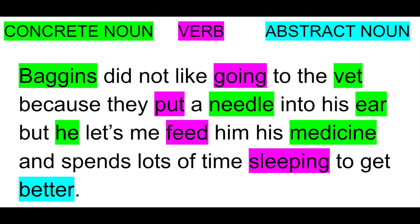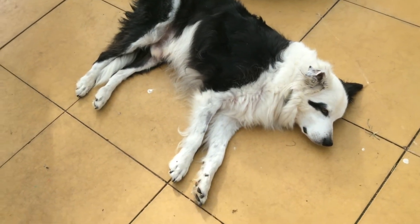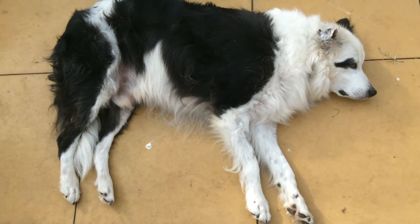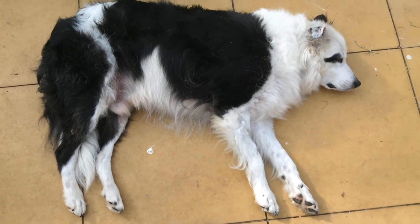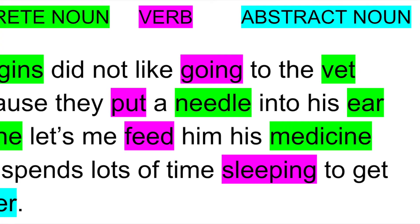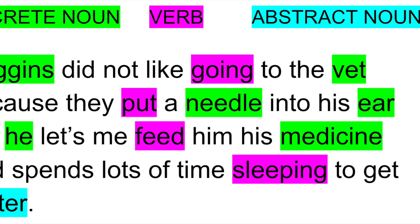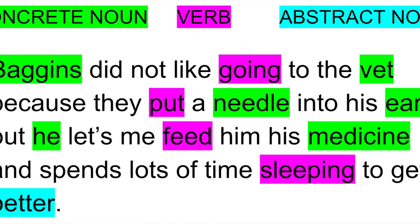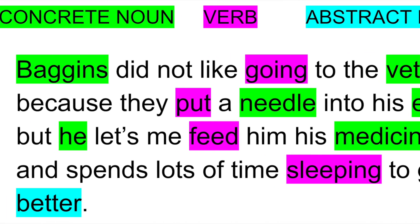If we think about the example and the evidence that we have about Baggins — Baggins did not like going to the vet because they put a needle into his ear. But he lets me feed him his medicine and spends lots of time sleeping to get better. You can watch the things that I've talked about: you can watch the vet put a needle in his ear, you can watch me feed him his medicine, and you can watch him sleeping. That's what makes these things examples of the evidence that we have about Baggins.